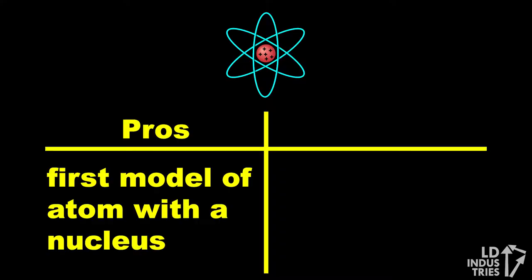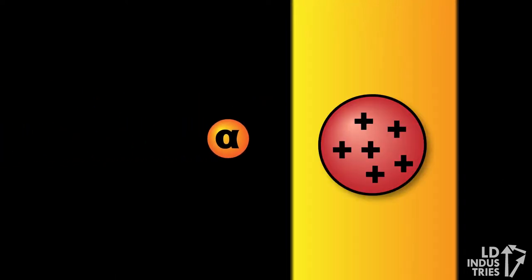On the pro side, this was the first model of the atom with a nucleus — a concentration of mass and positive charge in the center of the atom. Rutherford proposed this idea after his famous gold foil experiment, where he showed that alpha particles deflect off of something small, dense, and positive in the middle of an atom.